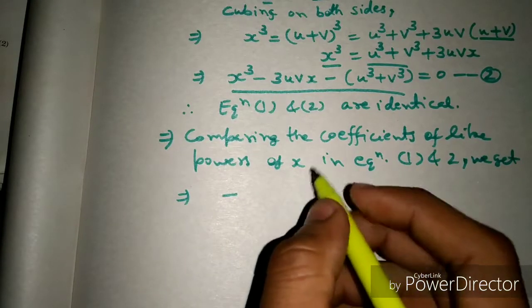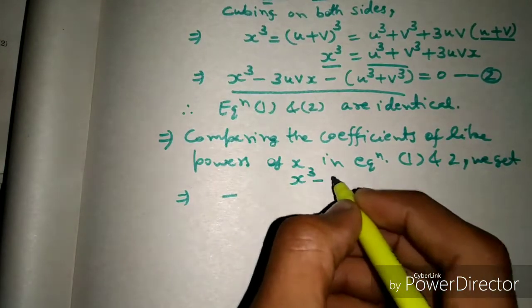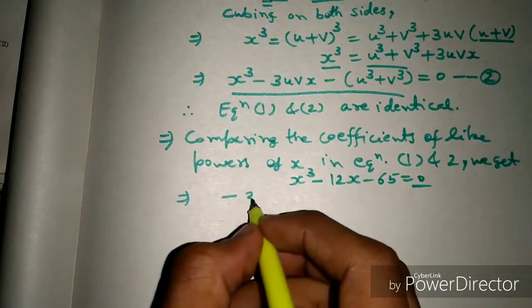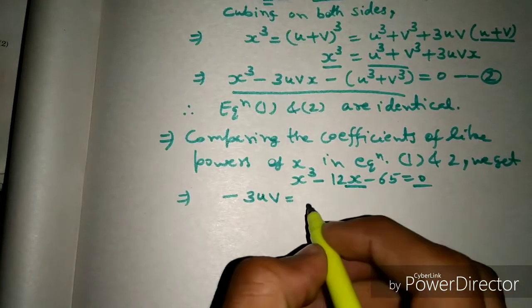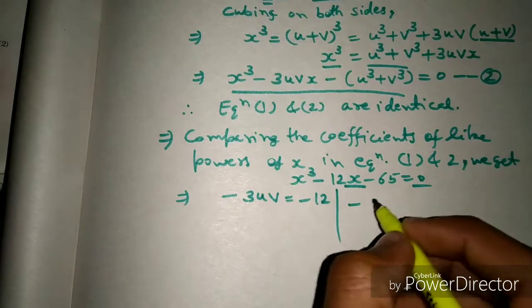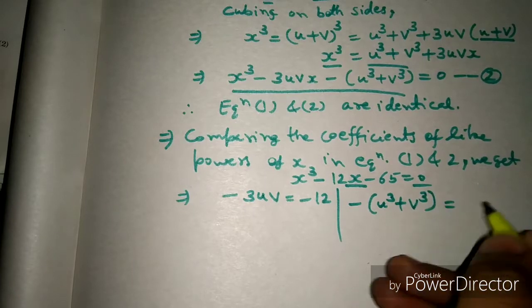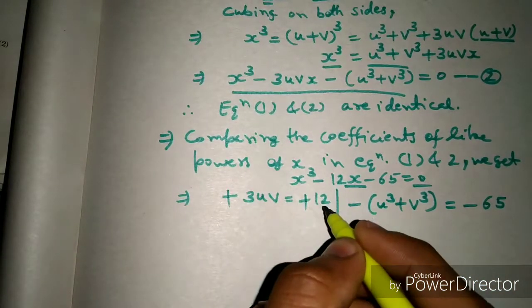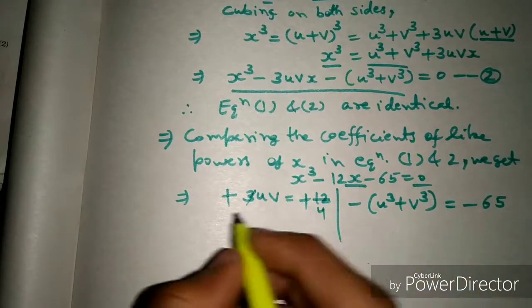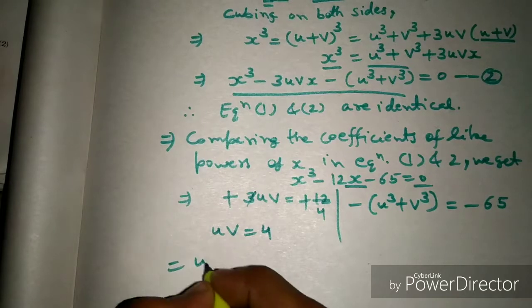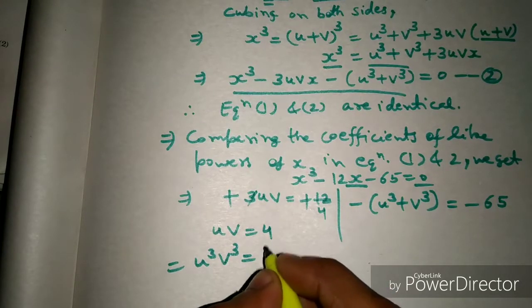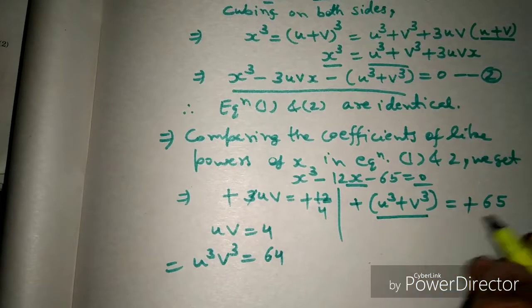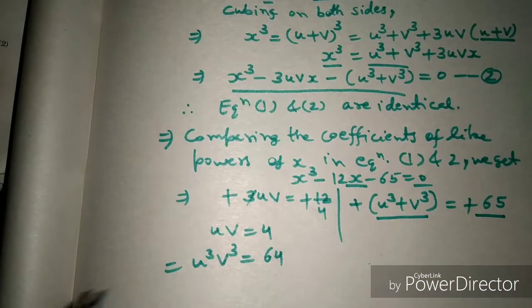The original equation is x³ - 12x - 65 = 0. Comparing coefficients: -3uv = -12, so uv = 4. And -(u³ + v³) = -65, so u³ + v³ = 65. If we cube uv = 4, we get u³v³ = 64.